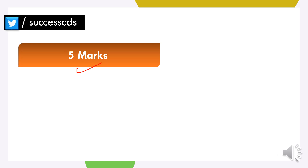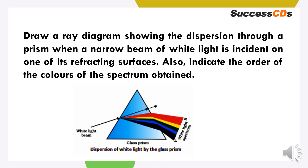We have five marks questions now. The first five marks question is: draw a ray diagram showing the dispersion through a prism when a narrow beam of white light is incident on one of its refracting surfaces, and also indicate the order of the colours of the spectrum obtained. White light apne alag-alag colours se milke bani hai, unhi ko bahar nikaal rahi hai, aur ek spectrum produce kar pati hai. White light is made up of seven colours — VIBGYOR — so we get a wide spectrum.